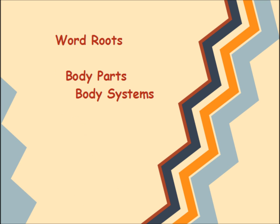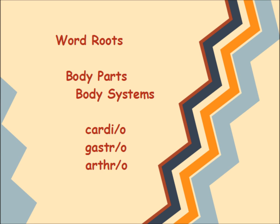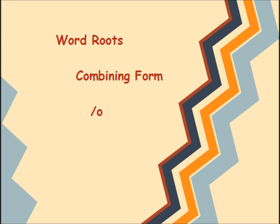Word roots describe things, such as body parts and systems. Examples include cardio, gastro, and arthro, meaning heart, stomach, and joint.